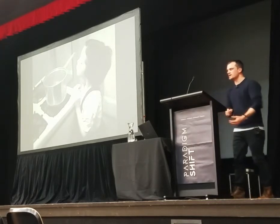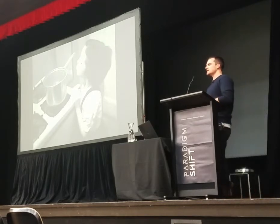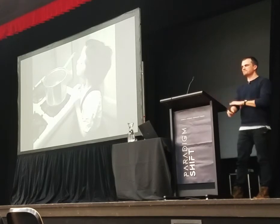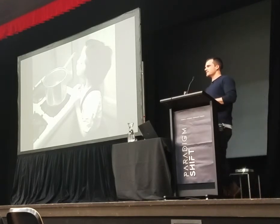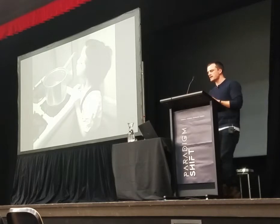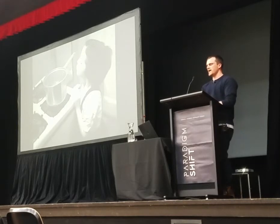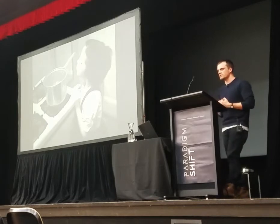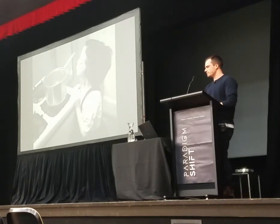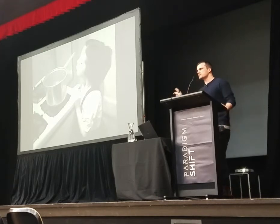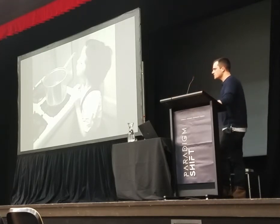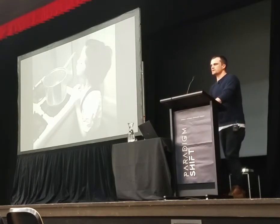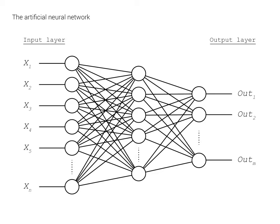Predicting the future has huge implications for our society beyond what's going on in our own brains. Since the beginning of computers, computer scientists have been obsessed with replicating the same kind of process inside an artificial system. This obsession led to the development of the field called machine learning — which is the reason most of you here probably know about artificial intelligence. One of the key technologies of machine learning is specifically modeled to replicate the way we think our own brains work: the artificial neural network.